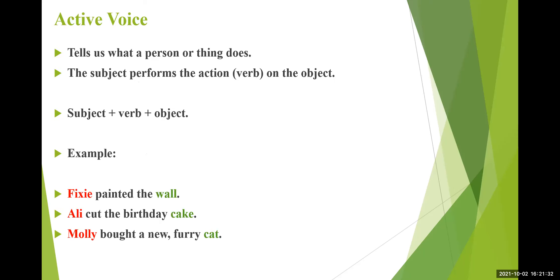Active voice humein batata hai what a person or thing does — the subject performs the action on the object. Active voice mein subject jo hai, woh action perform kar raha hai. Sentence ka jo structure hai, woh subject plus verb plus object. Example: Pixie painted the wall. Ali cut the birthday cake. Molly bought a new furry cat. Ismein sare jo subjects hain, woh active hain aur woh action kar rahe hain — Pixie painting, Ali cut the cake, Molly bought a cat — action subject object ke oopar kar raha hai.